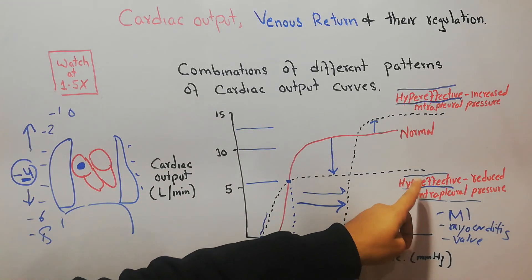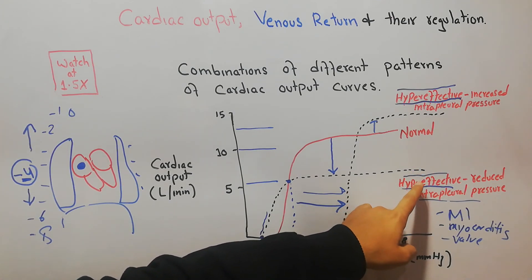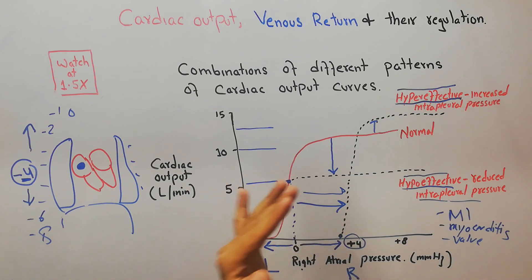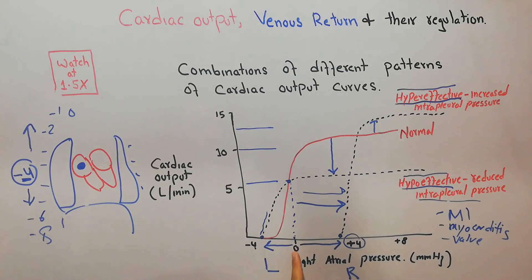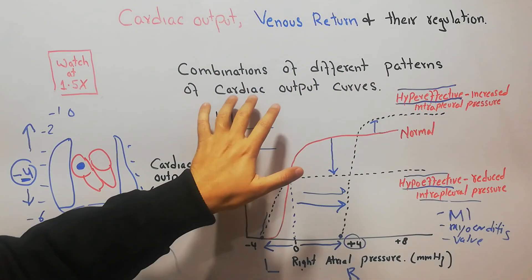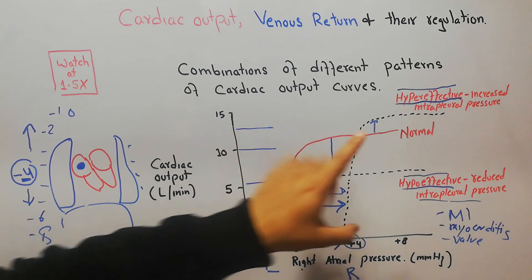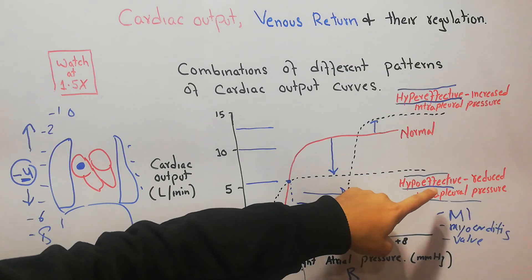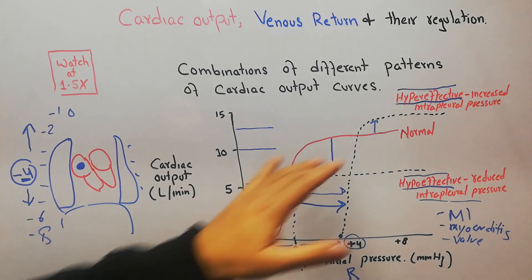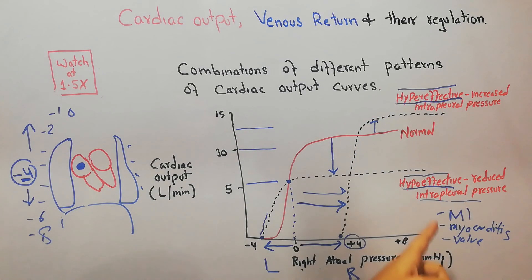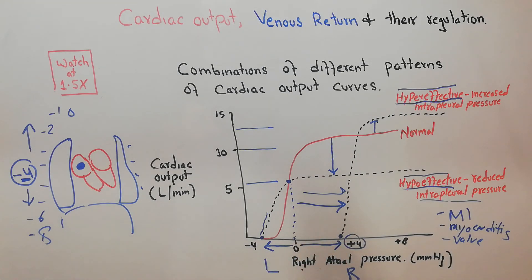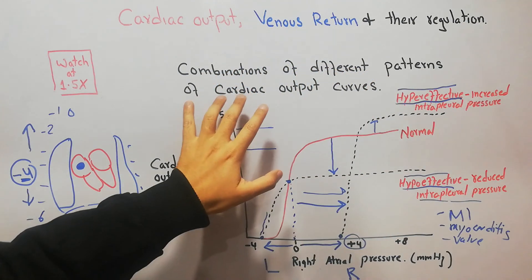It is also possible that the heart is hypo-effective with no change in intrapleural pressure, or hyper-effective with no change in right atrial pressure. The purpose of explaining these combinations of different patterns of the cardiac output curve is to illustrate different scenarios where the heart may be normal, hyper-effective, or hypo-effective, with increased, reduced, or unchanged intrapleural pressure. That's all about the combination of different patterns of cardiac output curves.